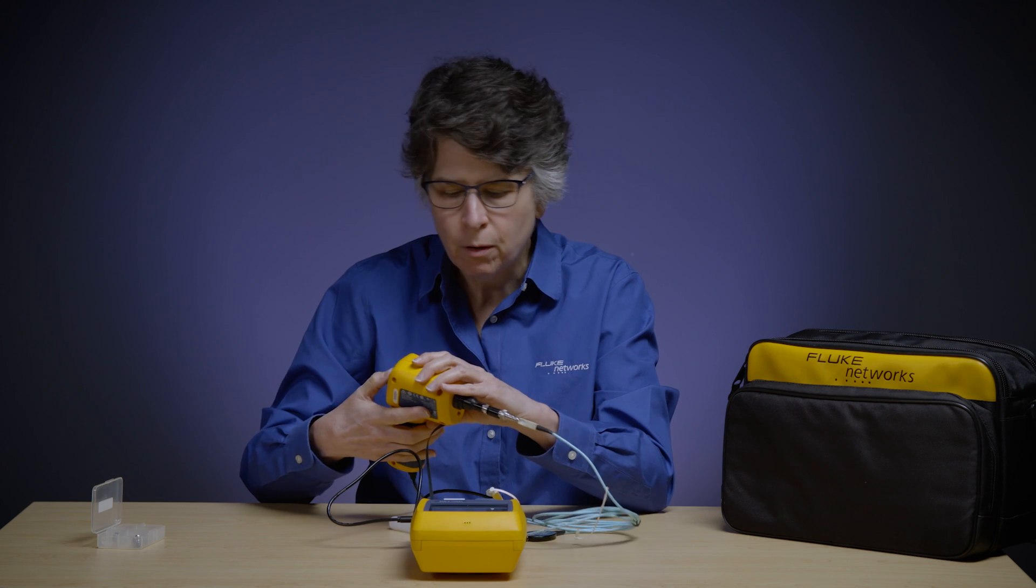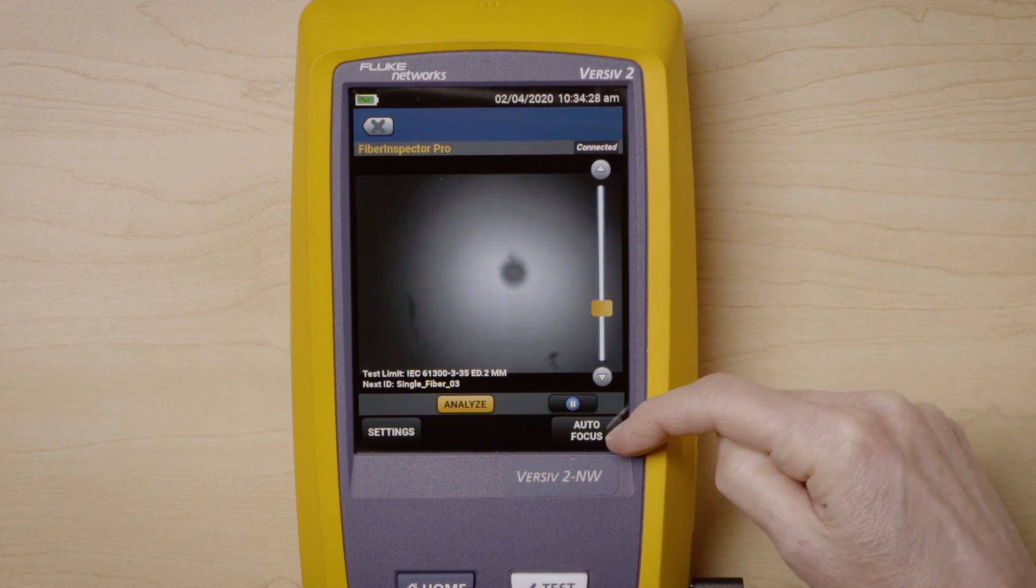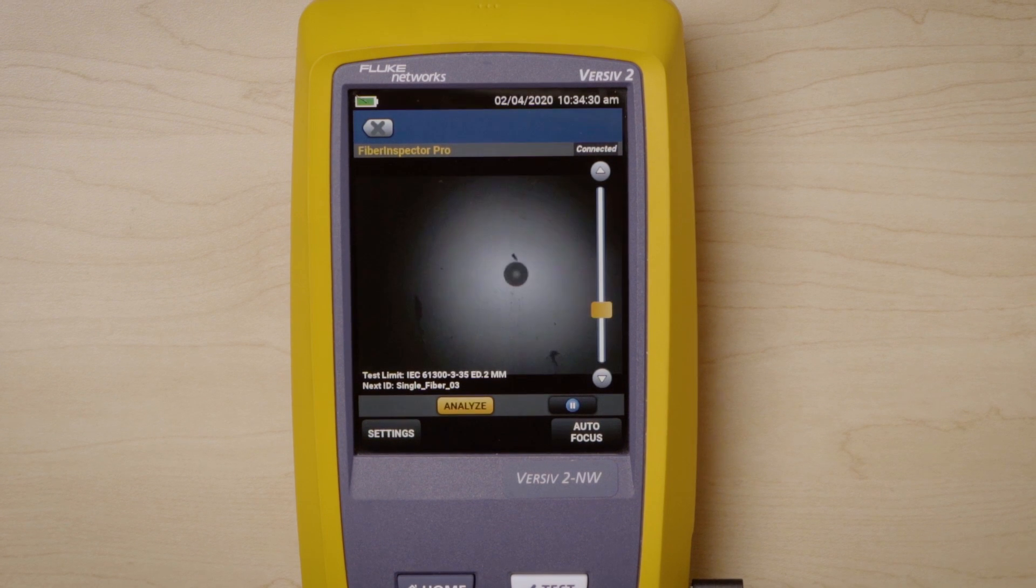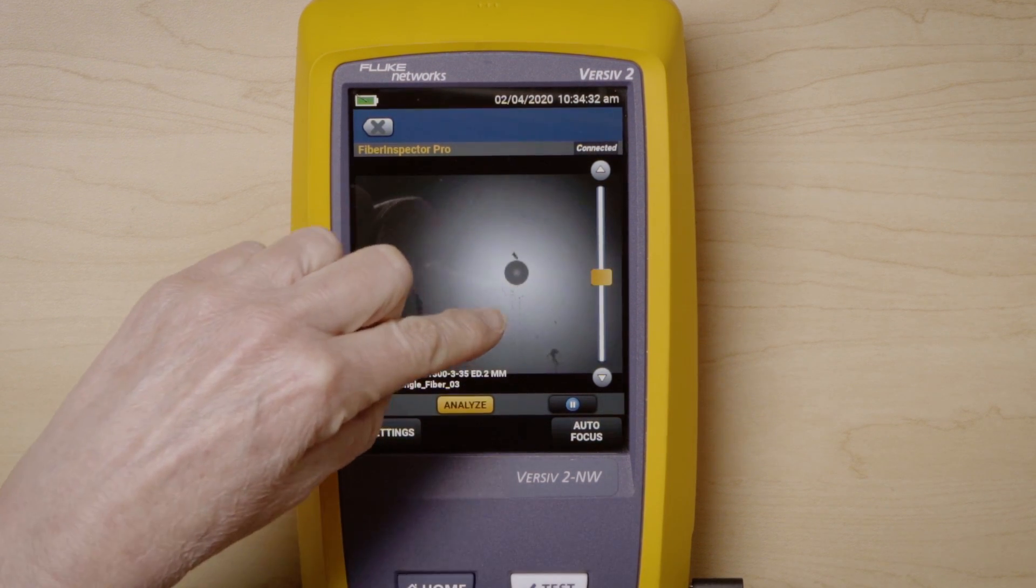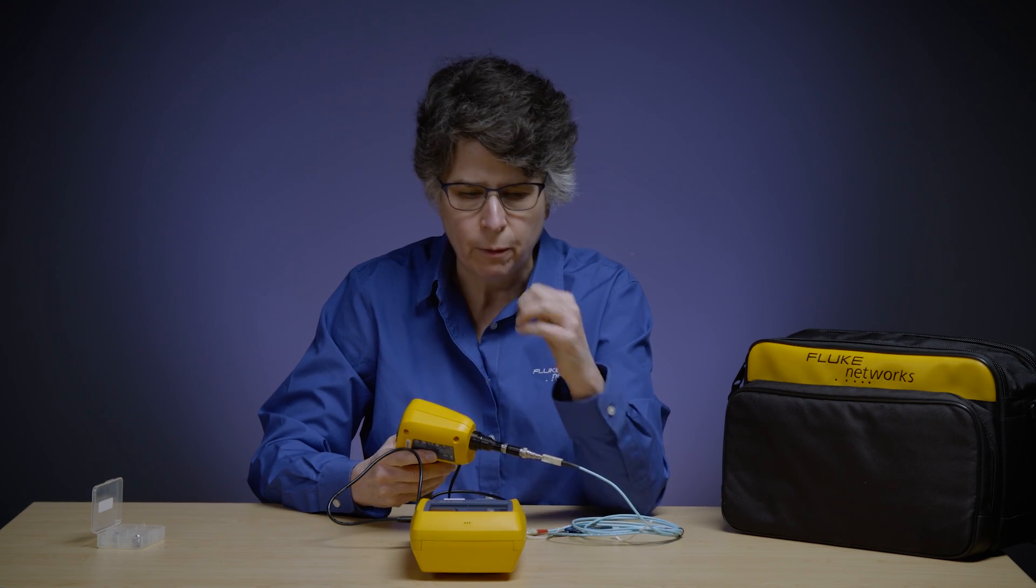I'm going to press autofocus on the camera right here, or I could press autofocus on the Versive itself, and it autofocuses. Now that looks, again, really small because that's a single fiber where an MPO could be something like 32 fibers.